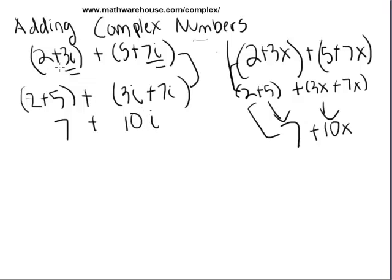So basically, when you're adding like terms, you're treating it like an Algebra 1 problem. You're just going to combine the numbers, combine the imaginary expressions, and from there, simplify.